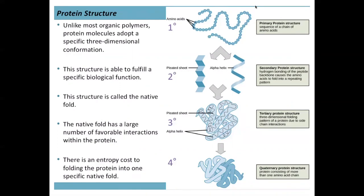Like most organic polymers, protein molecules adopt a specific three-dimensional conformation. This gives rise to the protein's structure and function — the three-dimensional arrangement of those amino acids. The structure enables a specific biological function: it could be an enzyme involved in catalysis, a structural protein, or a signaling molecule. This structure is called the native fold. The native fold has a large number of favorable interactions, but there is also an entropy cost as you organize a floppy chain into organized regions.